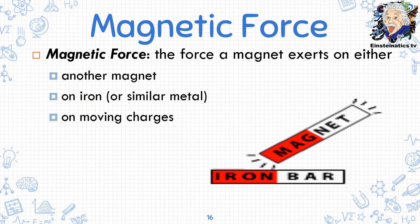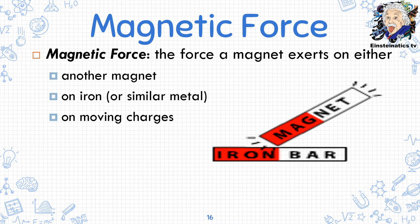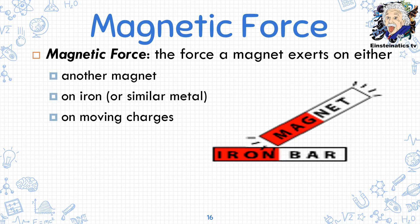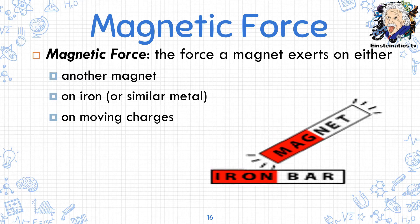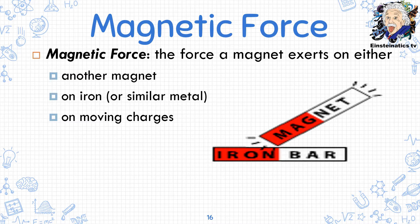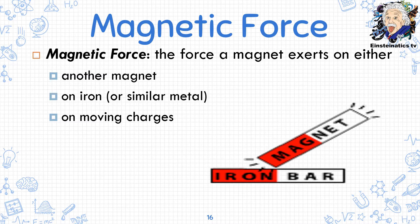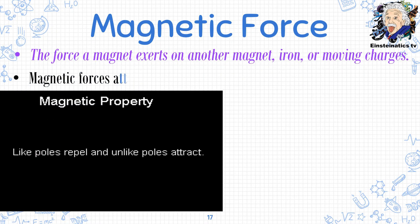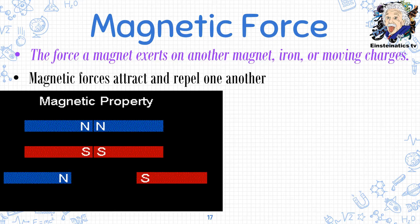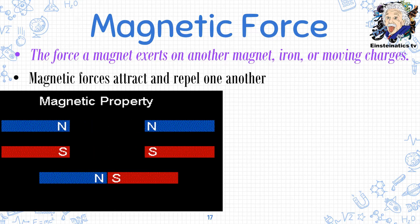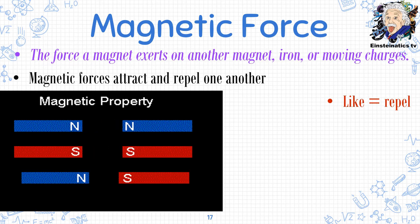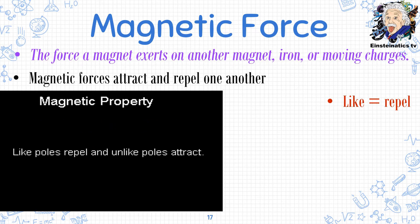Because of the composition that makes up a magnet, it produces what is called magnetic force — the force a magnet exerts on either another magnet, on iron or similar metals, or on moving charges. Magnetic force has only two effects: it could either attract or repel. One important concept: like poles repel, and unlike poles attract.